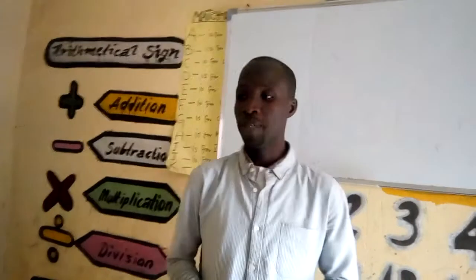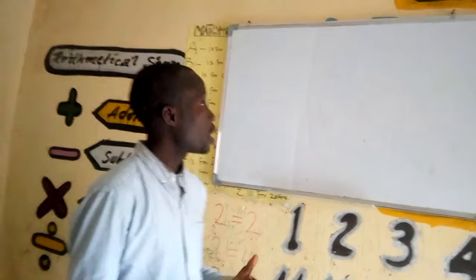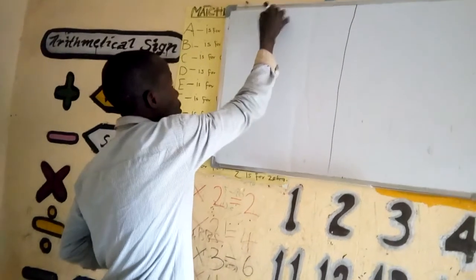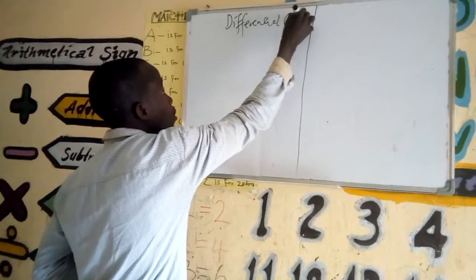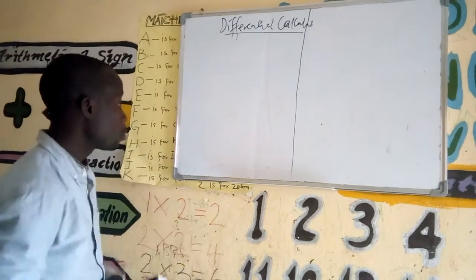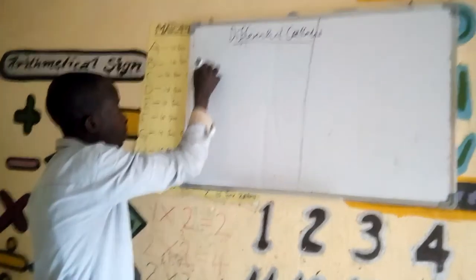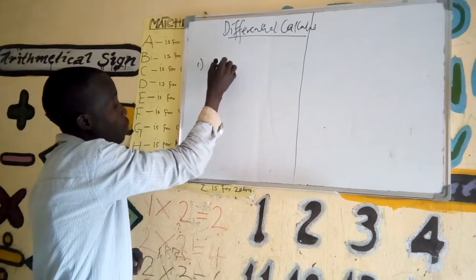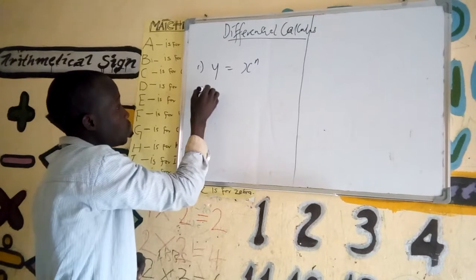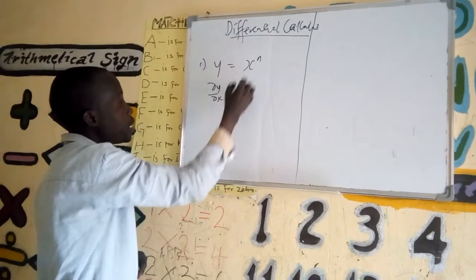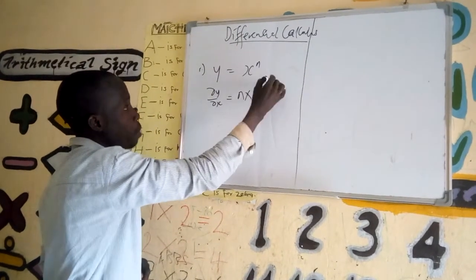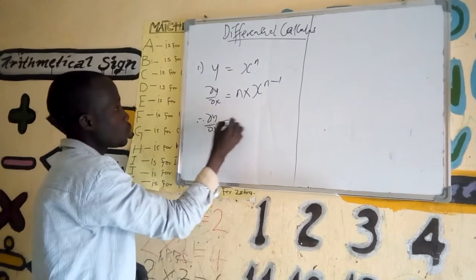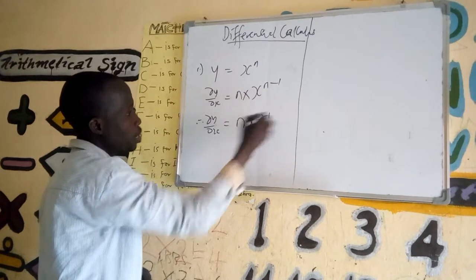Welcome to Mass4U Channel TV. Last time we tried to see how we can use differential calculus to solve some problems. This concept of differential calculus — if you are given y equals x to the power n, we say that dy by dx equals n times x to the power n minus one.